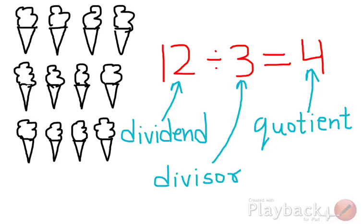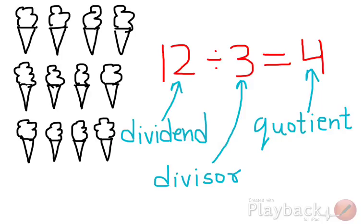Here 12 is the dividend, 3 is the divisor, and 4 is the quotient. The quotient is the answer we get. If you have a hard time remembering the word dividend, you can easily remember it as this is the number going to be divided — that's why it's called the dividend.